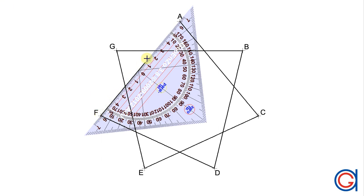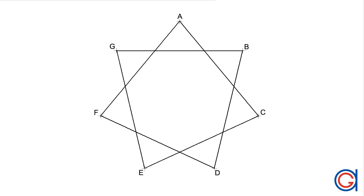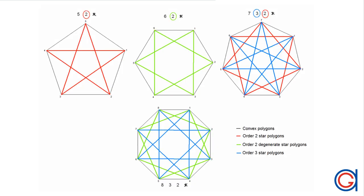We continue joining vertex F to vertex A. Now that we have completed our order two star heptagon, pressing the following link shows you how to draw regular star-shaped polygons with any number of sides, and it also explains their mathematical theory.